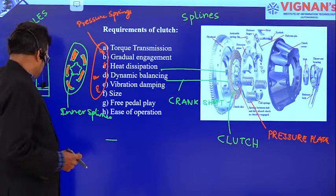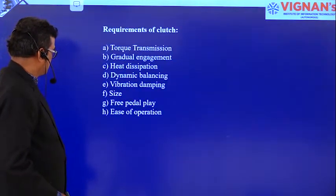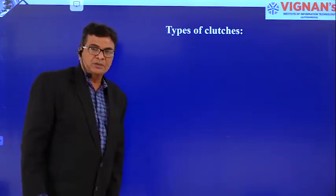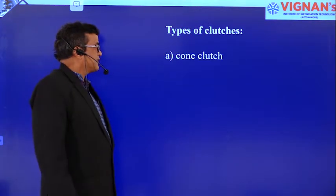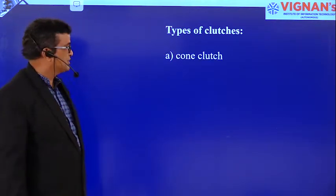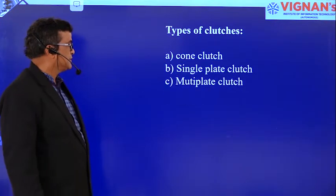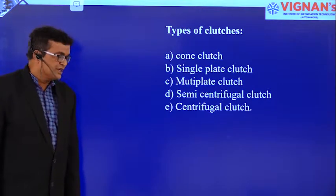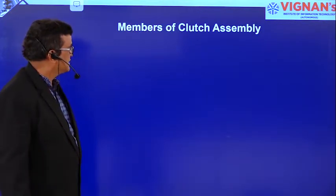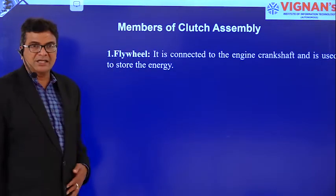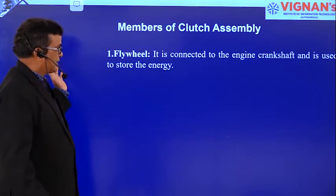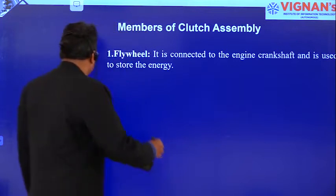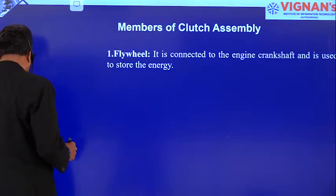Coming to the types of clutches: cone clutch, single plate clutch, multi plate clutch, semi-centrifugal clutch, and centrifugal clutch. These are the types of clutches. Now let us discuss the clutch assembly. As I have drawn, the flywheel is connected to the engine's crankshaft. It is a heavy block of mass.